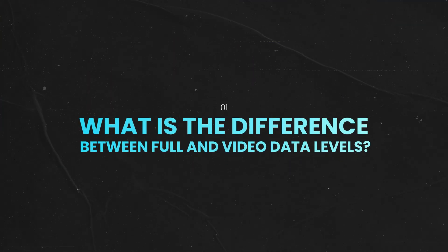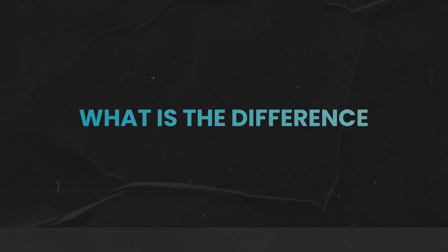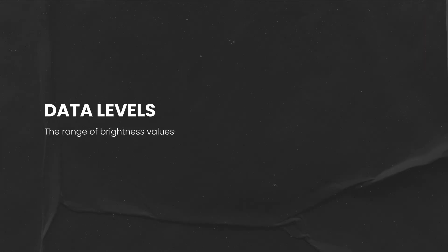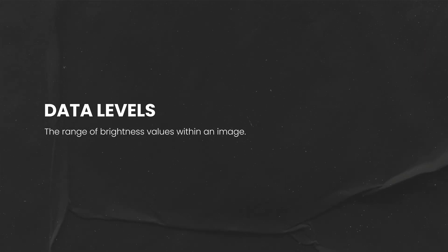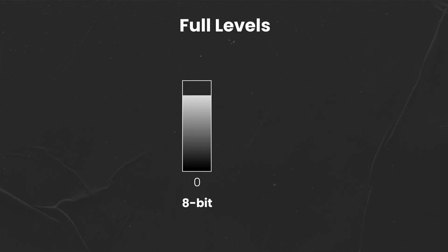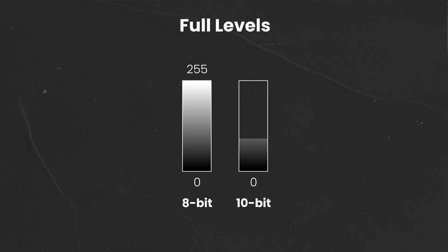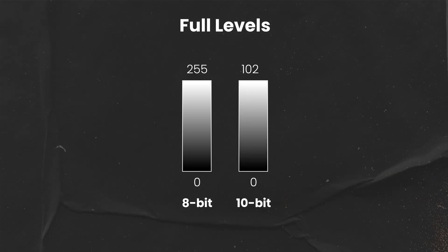What is the difference between full and video data levels? Put simply, this refers to the range of brightness values within an image. In full data levels, the range on an 8-bit scale starts from 0, being pure black, and goes up to 255, which is pure white. On a 10-bit scale, the values are from 0 to 1023.